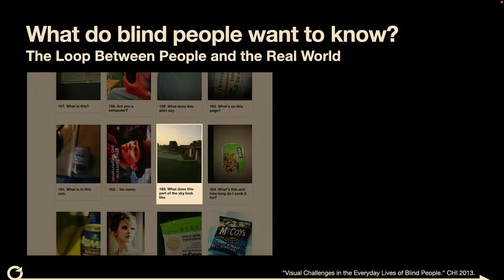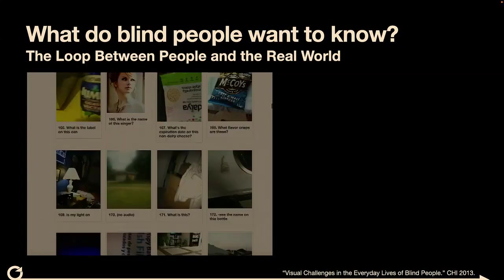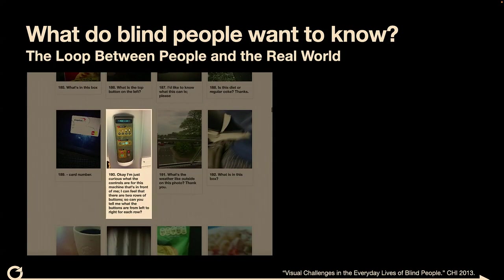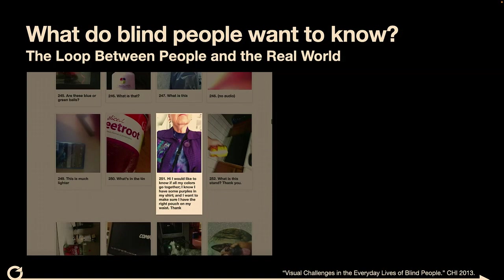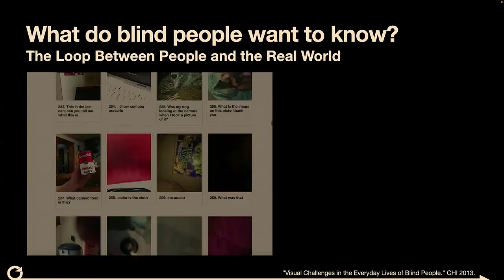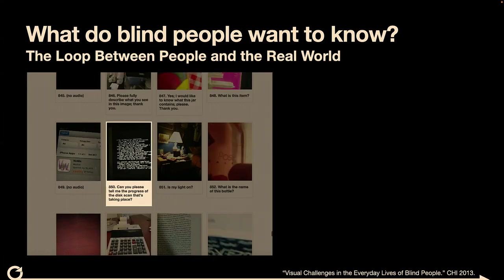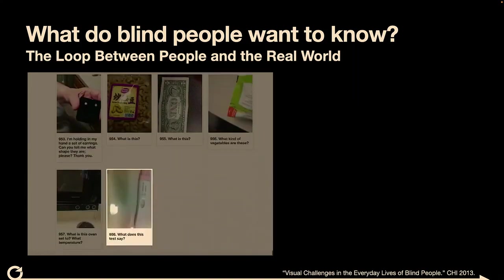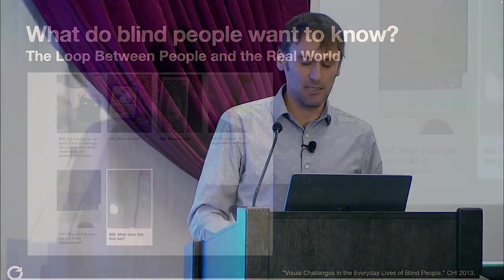They asked all kinds of things — like what the sky looks like right now, how to use a coffee machine interface with all those buttons, fashion advice, broken computers where the screen reader no longer worked, and even pregnancy tests: what does this test say? A huge variety — maybe not what you were expecting, maybe it is. One thing we got out of this was that generic image descriptions weren't enough. Textual description often isn't enough to help a user accomplish what they actually wanted to do.